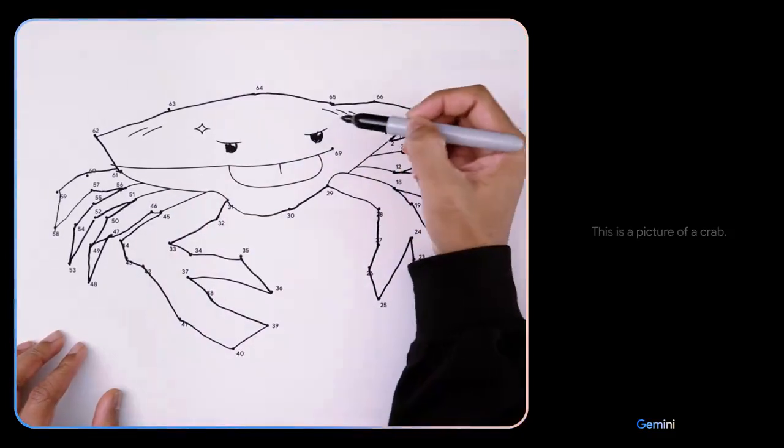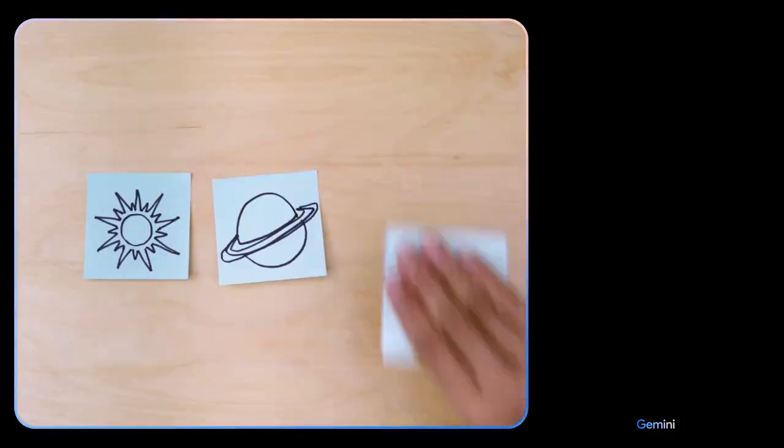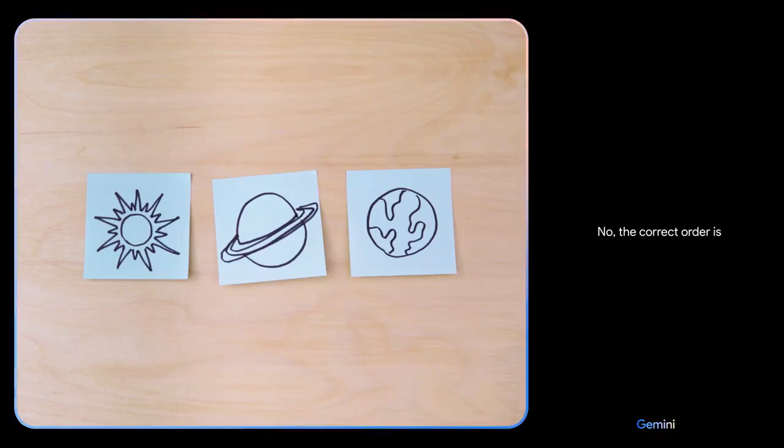This is a picture of a crab. That's right. Is this the right order? No. The correct order is Sun, Earth, Saturn.